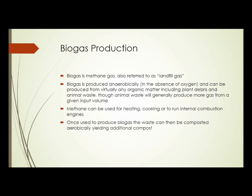Another up-and-coming method of disposal is biogas production. Biogas is methane gas, also sometimes called landfill gas or swamp gas. Biogas is produced anaerobically — in the absence of oxygen — and can be produced from almost any kind of organic matter, including plant debris and animal waste. Animal waste generally produces more gas from any given initial input volume. Methane can be used for heating, for cooking, or to run internal combustion engines. Once waste has been used to produce biogas, the waste can then be composted aerobically, yielding an additional amount of compost.